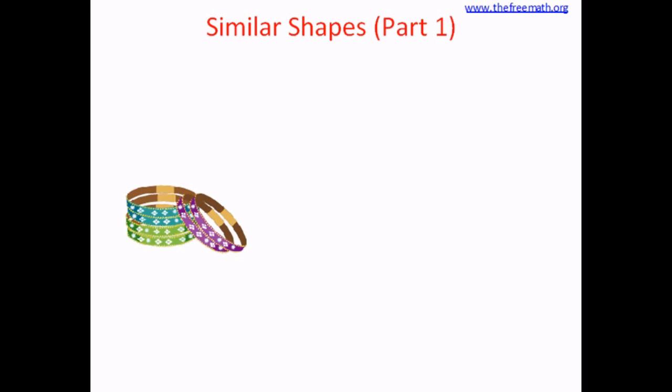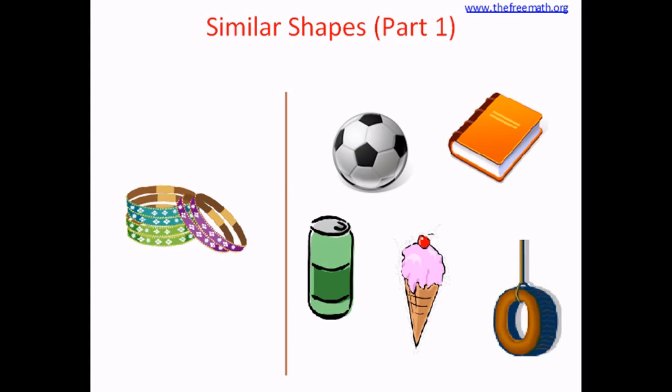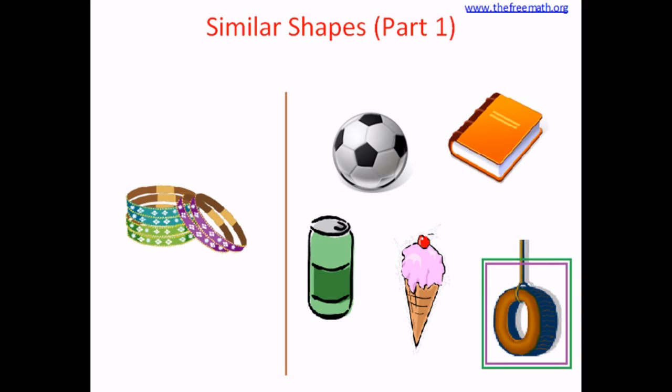The next one are bangles. And what do the bangles look like? Are bangles like a ball? No. Are bangles like an ice cream? No. Are bangles like a tire? Yes. The bangles and the tire are similar shapes. The shape of a bangle and the shape of a tire are similar. Both are round and there is a hole in the middle.